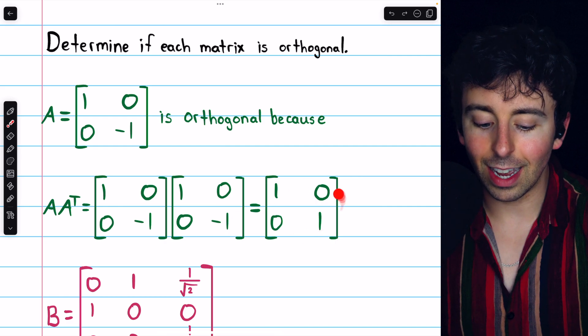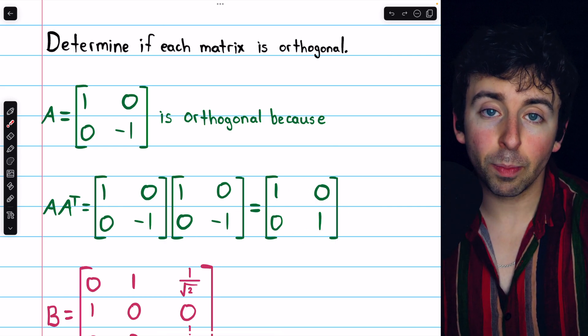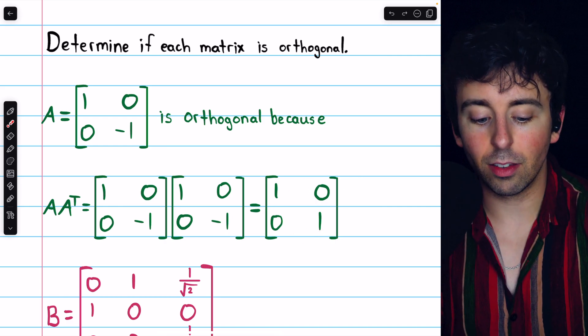So A times A transpose is the identity, hence A transpose is the inverse of A, and so by definition, A is orthogonal.